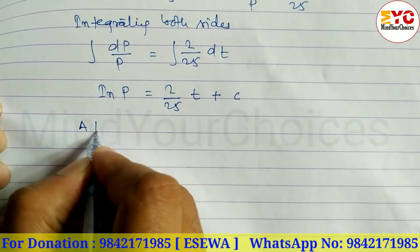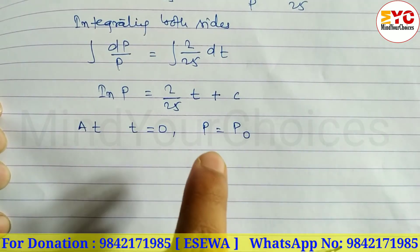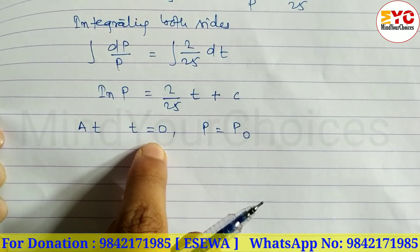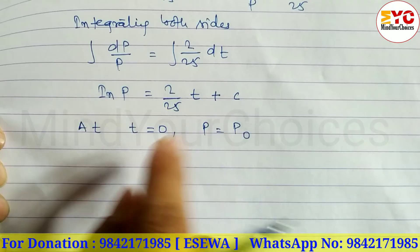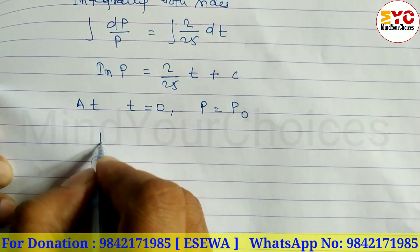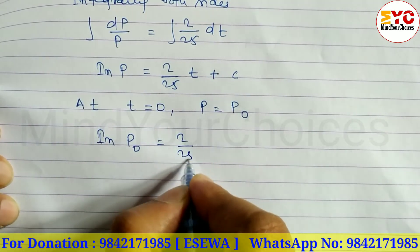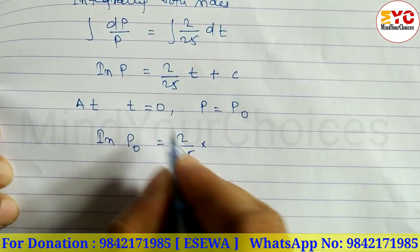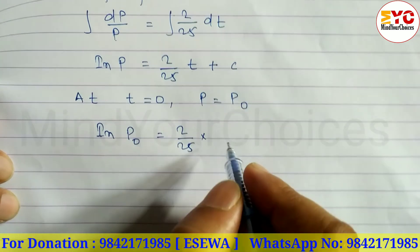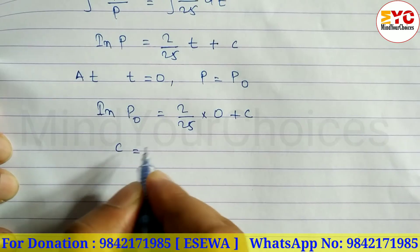Now when T is equal to 0, then P is equal to P0, initial population. So what we can write here: in place of P we write P0 is equal to 2 by 25 times 0 plus C. So we get C is equal to ln P0.